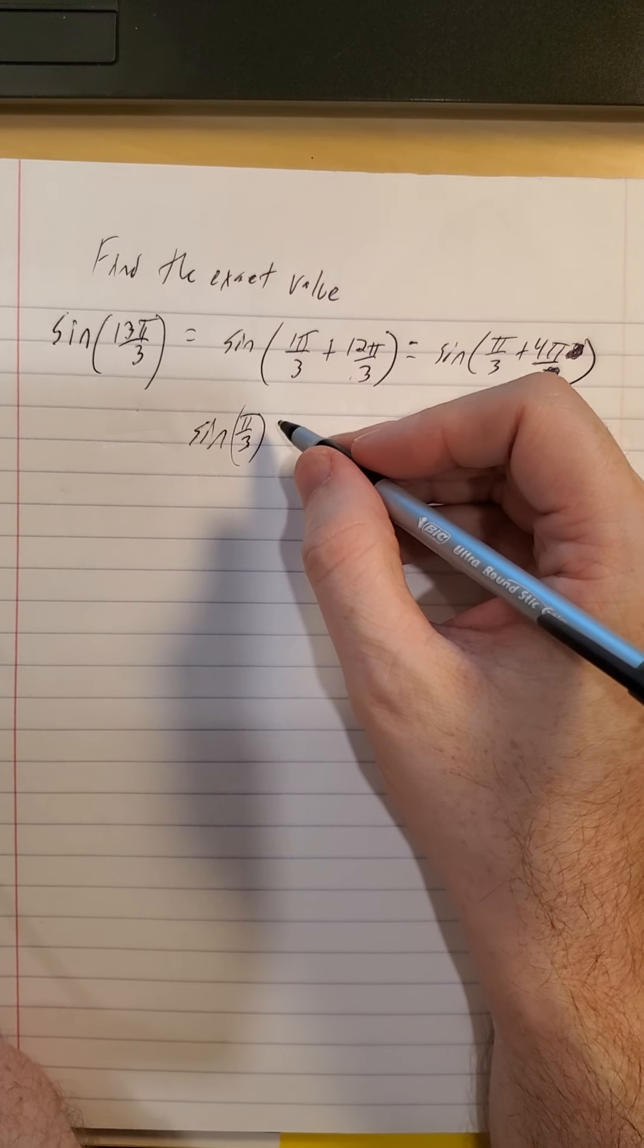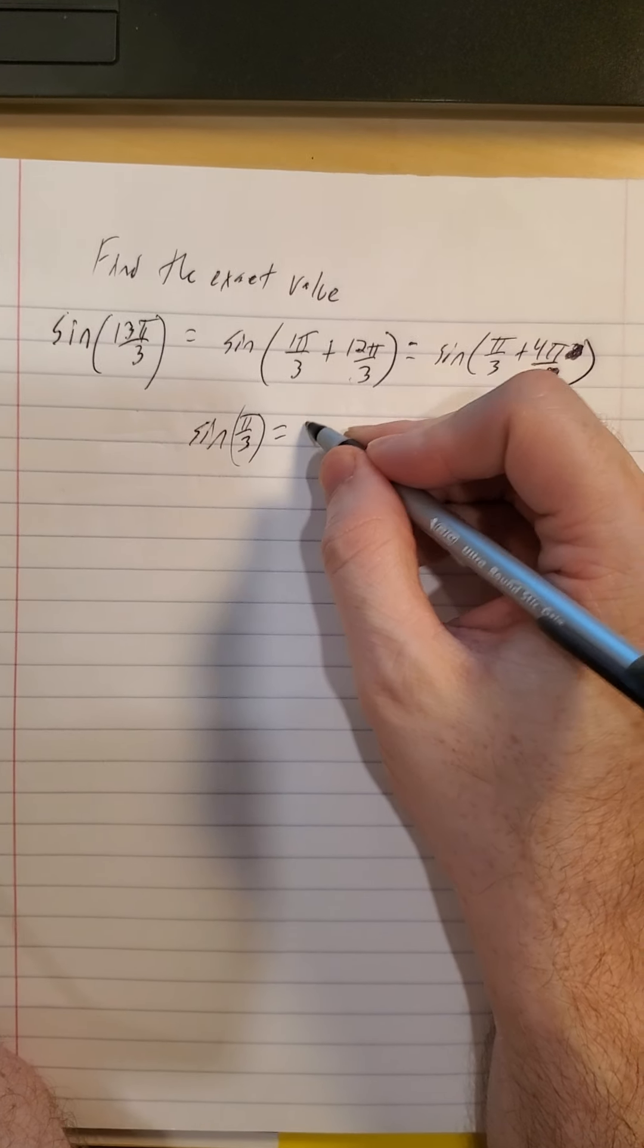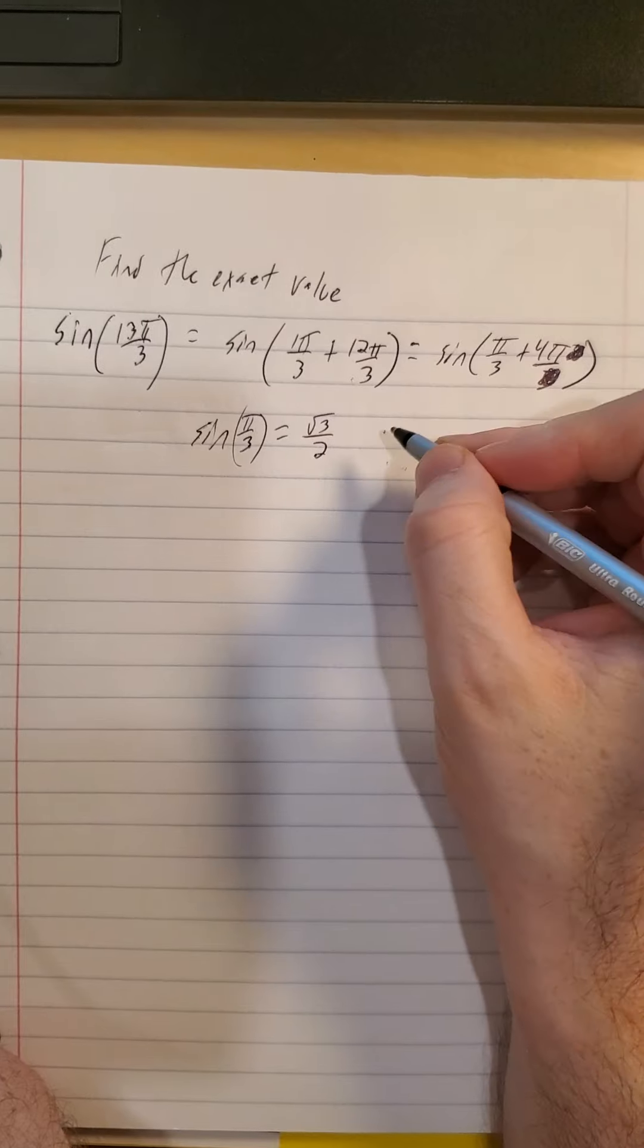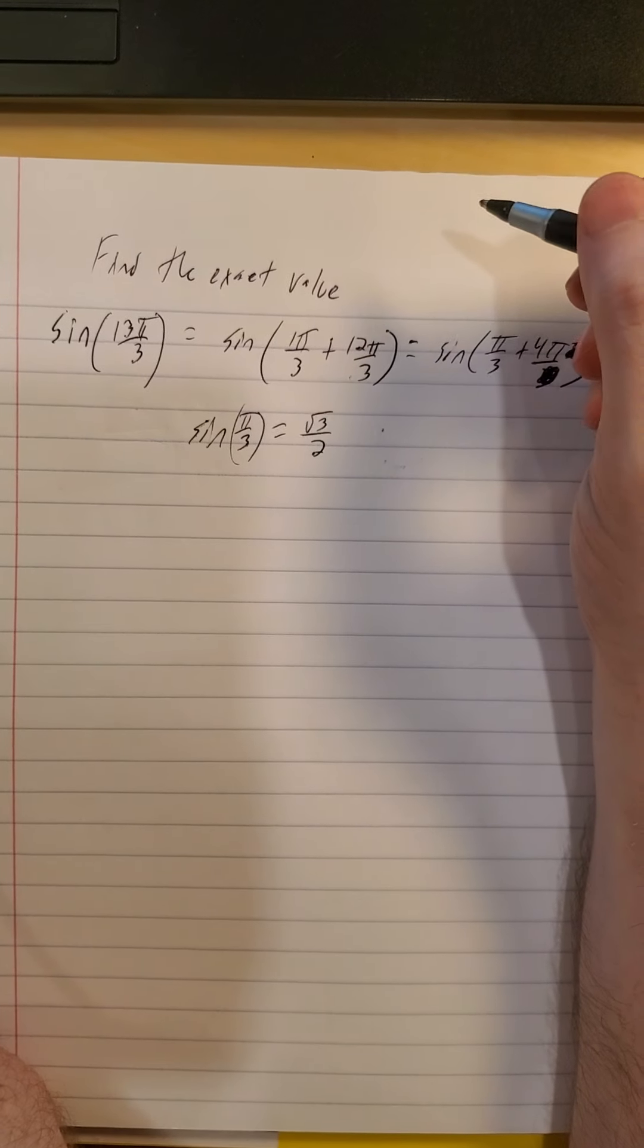So this is then the same as just the sine of π over 3. Sine of π over 3, π over 3, remember, is 60 degrees, so that is root 3 over 2 from your unit circle.